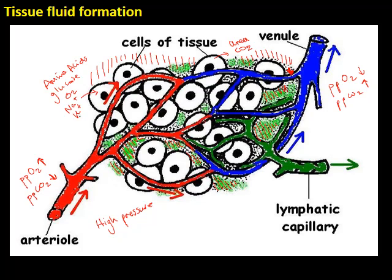About 90% of the tissue fluid goes back into the venous end of the capillary. About 10% of the tissue fluid actually drains into lymphatic capillaries, which carry it through the lymphatic system. This tissue fluid will eventually end up back in the blood circulation through the thoracic duct, which opens into the subclavian vein up near the neck area of the body.